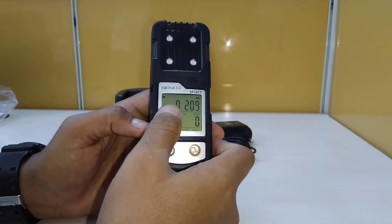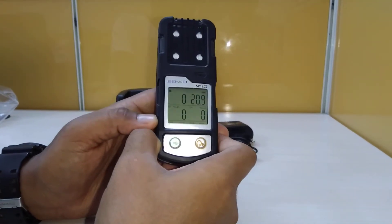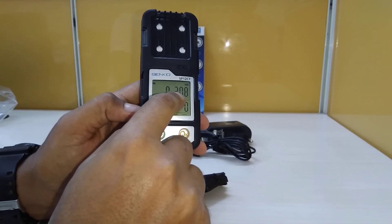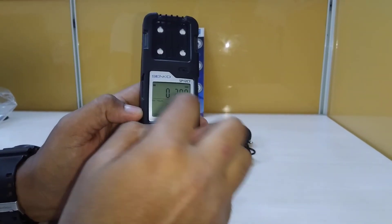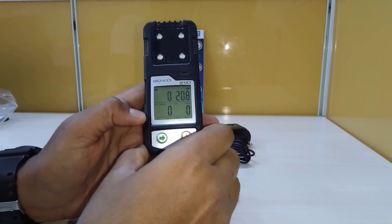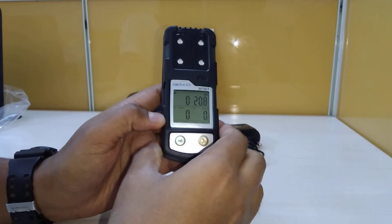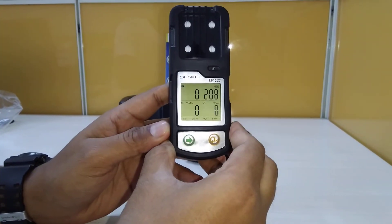This is now the ready screen where we can see the oxygen percentage at room oxygen level of 20.8, and LEL, carbon monoxide, and hydrogen sulfide at 0 ppm.